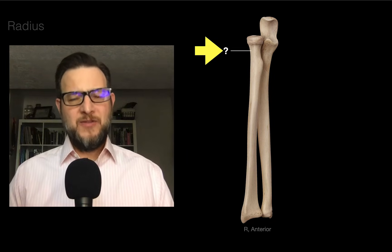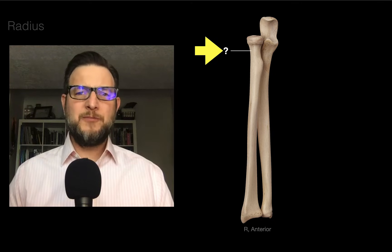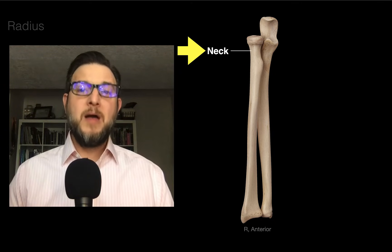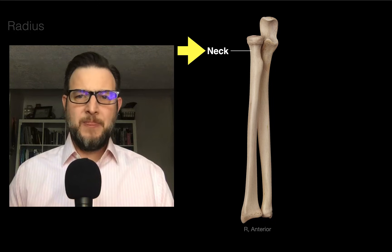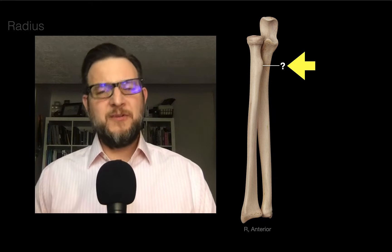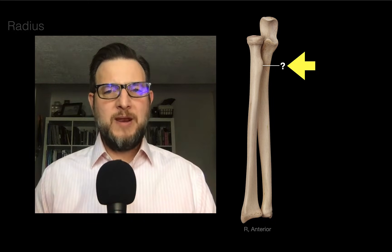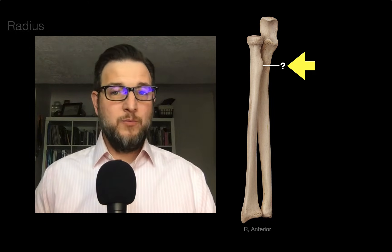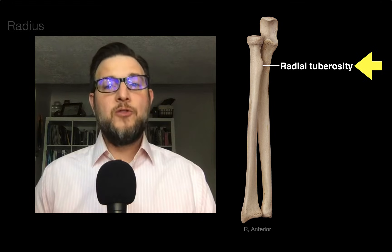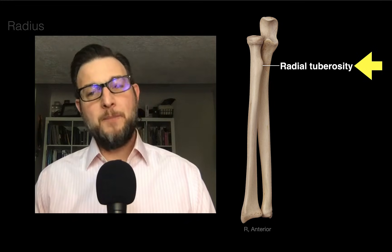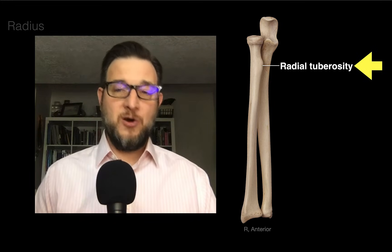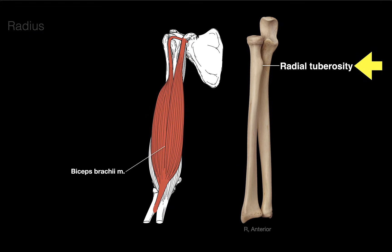Below the head, anatomists said: what do we call this part? We call it the neck of the radius. And this bump, this swelling on the radius — we call it the radial tuberosity.